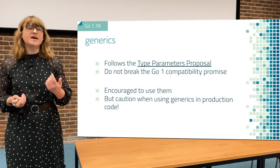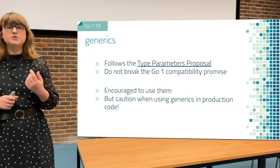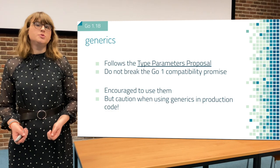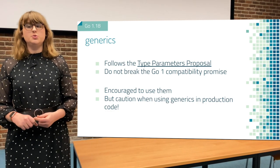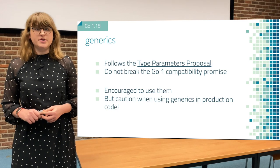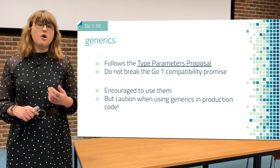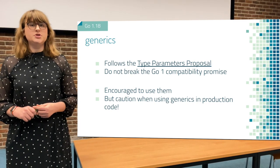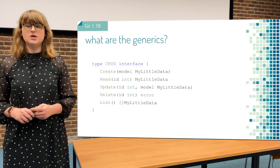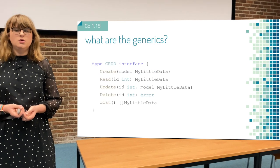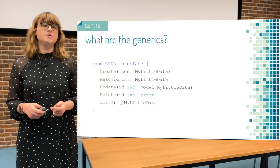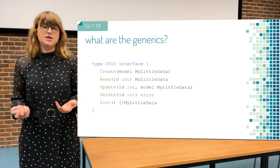Generics in Go follow the type parameter proposal, and they do not break the Go 1.0 compatibility promise, meaning that all your existing Go code will still work in Go 1.18 with generics. The Go team encourages you to use generics inside your Go code, but warns you against using it in production code, since it is not as well tested as some other parts of Go. So what are generics exactly? Well, we have here a typical CRUD interface, which you all have probably written many times in your life.